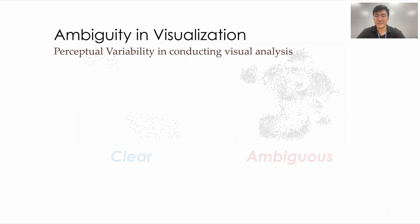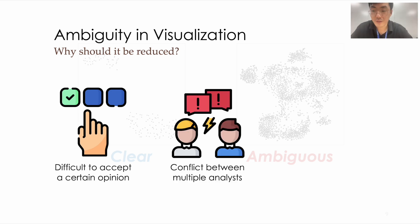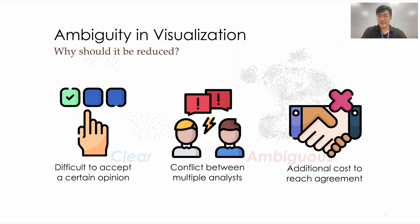Ambiguity of visualization denotes the possibility of variability in conducting visual analysis using the visualizations. Here, we claim that ambiguity can be a threat in visual analytics. Think of a situation in which multiple analysts perceive a visualization in different ways due to ambiguity. As analysts will raise different opinions, we can hardly accept one of them. Also, conflicts can occur between analysts with different opinions, leading to additional costs in reaching an agreement on a final conclusion. Now, we may raise a question.